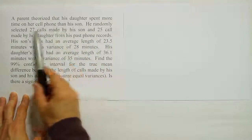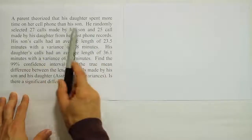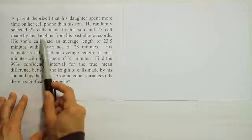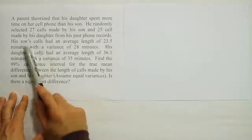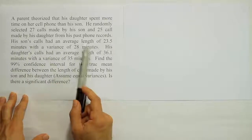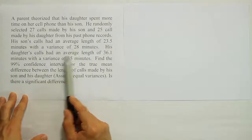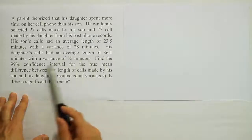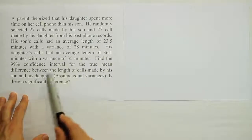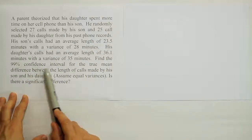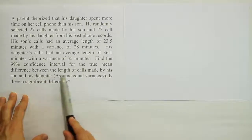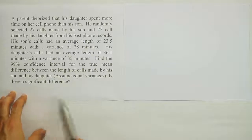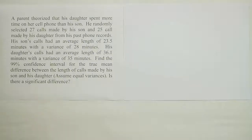A parent theorized that his daughter spent more time on her cell phone than his son. He randomly selected 27 calls made by his son and 25 calls made by his daughter from his past phone records. His son's calls had an average length of 23.5 minutes with a variance of 28 minutes. His daughter's calls had an average length of 36.1 minutes with a variance of 35 minutes. Find a 99% confidence interval for the true mean difference between the length of calls made by his son and his daughter. Assume equal variances. Is there a significant difference?